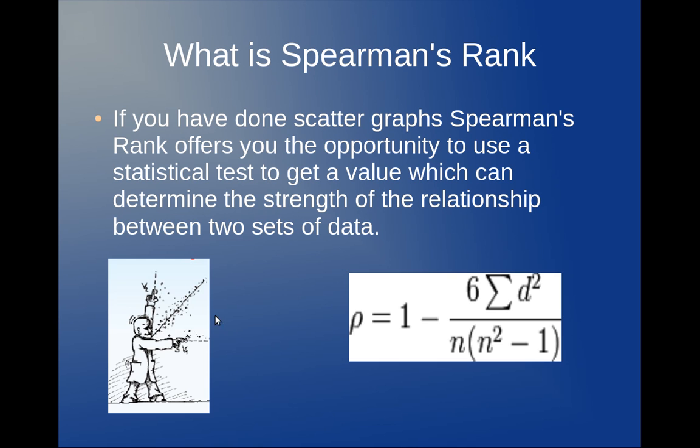The normal way of doing this is to get the two pieces of data and plot them on a scatter graph and see if the points show a correlation. But Spearman's rank is quicker and it actually gives you a numeric value between 0 and 1. 0 meaning no correlation and 1 meaning strong correlation. And this can save you time and effort really.